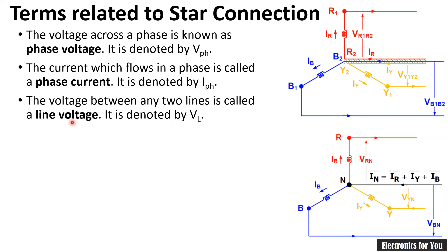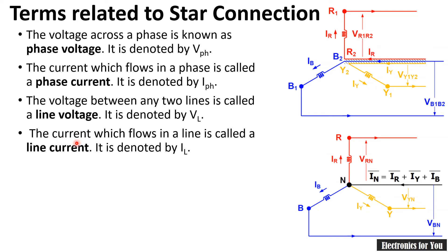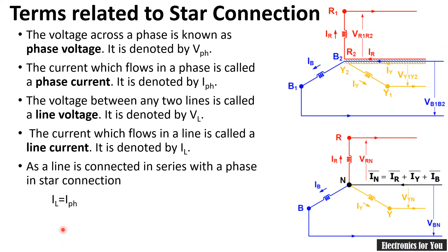Line voltage is denoted VL, and phase voltage is denoted VPH. The current which flows in the line is called line current, denoted IL. In the case of a star connection, the phase and the line are connected in series, and therefore IL equals IPH, because in series the current remains constant. So in star connection, IL = IPH.